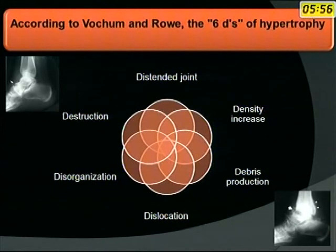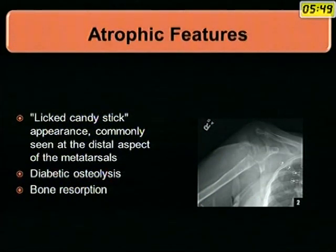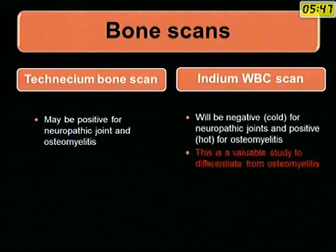The six D's of hypertrophy are: distended, density increase, debris production, dislocation, disorganization, and destruction. Atrophic features show a licked-candy appearance because of osteolysis of the bone.